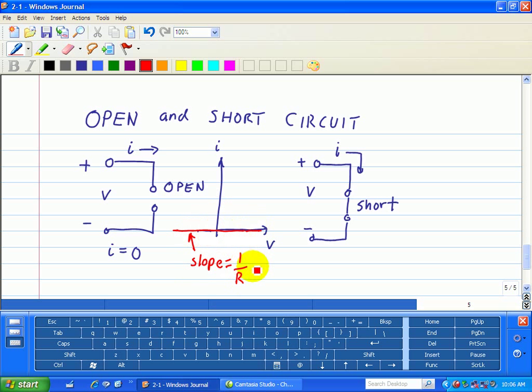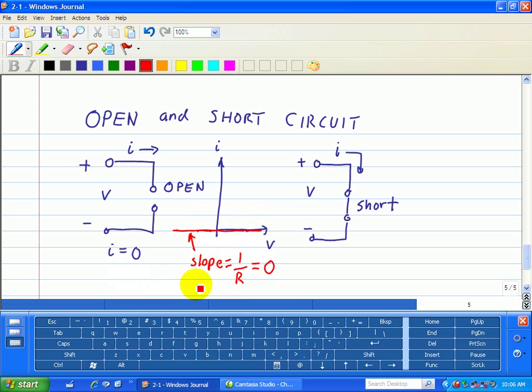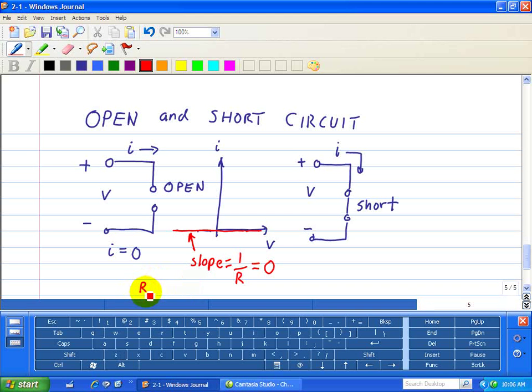But the slope actually is zero, which implies that R, the resistance, is equal to infinity, a very large number.